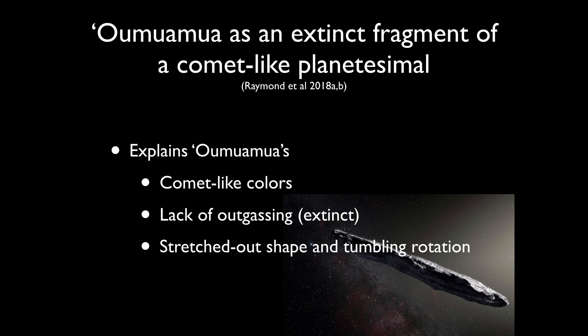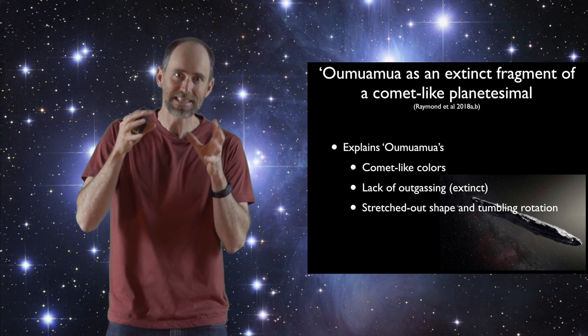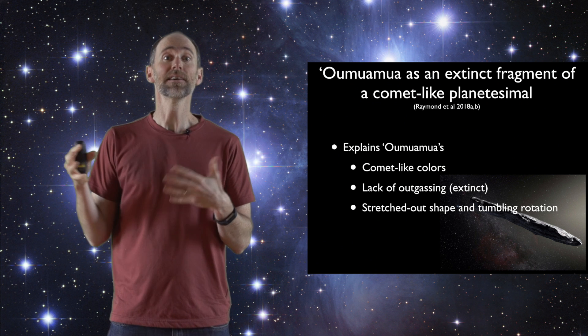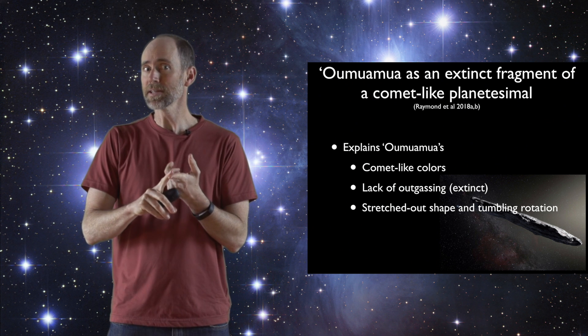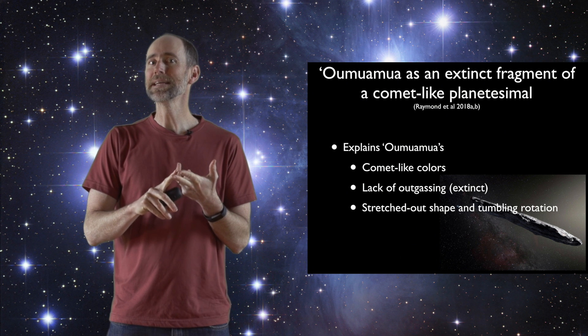So putting the pieces together, we think that Oumuamua is a fragment of a comet-like planetesimal that was rendered extinct before it was ejected.